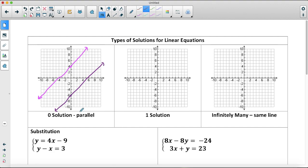If these lines never cross, then they have no solution because the lines will never intersect. This happens when the lines are parallel, meaning that they have the same slope but different y-intercept.